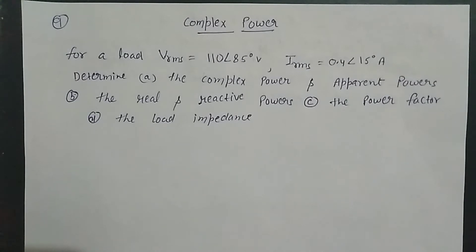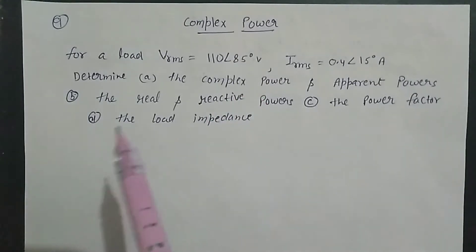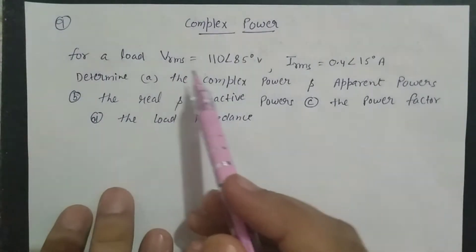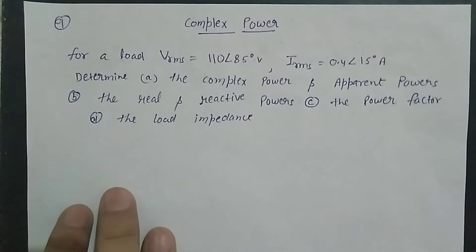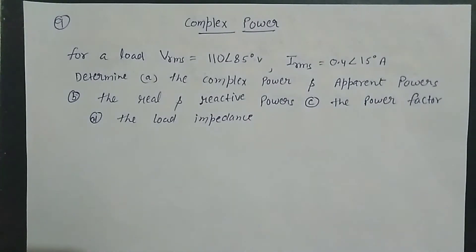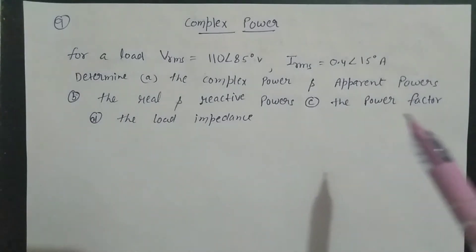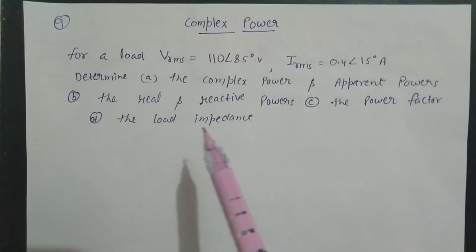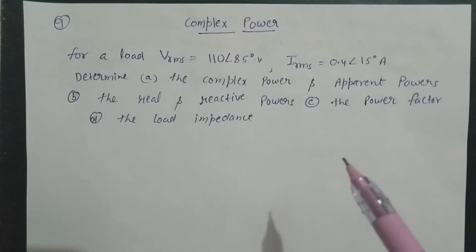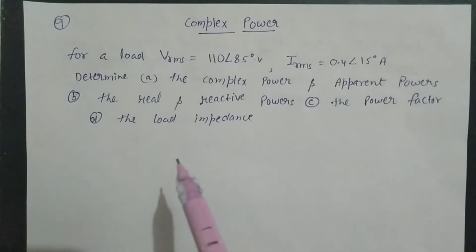Hello everyone, welcome to my channel. Today we are back with a new question from complex power. The given values are: V_RMS = 110∠85° volt, I_RMS = 0.4∠15° ampere. We need to determine complex power, apparent power, real and reactive power, power factor, and load impedance — these are all the parameters we need to calculate.